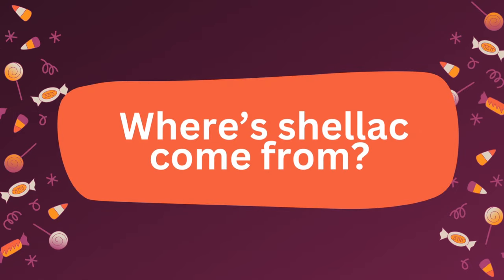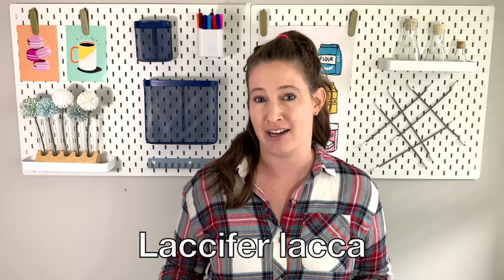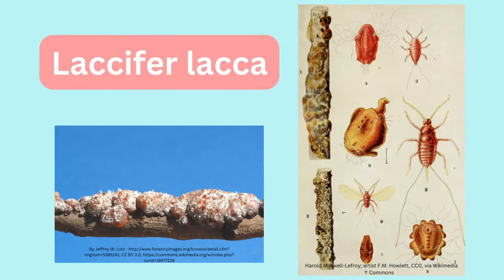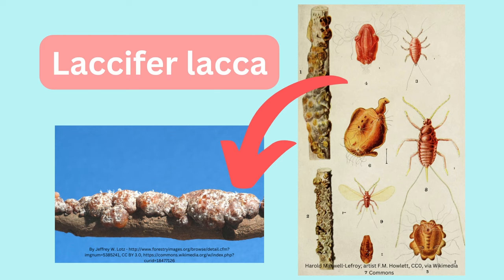First, let's tackle where does this shellac come from? Because it does come from a bug — more specifically from this parasitic insect called Laccifer lacca. This parasite lives on trees and shrubs and uses them as its home. And more importantly for us, it secretes this resin which is called shellac. This shellac is tough, it's hard, and it has sort of a sheen to it. It secretes this resin to protect its larvae.